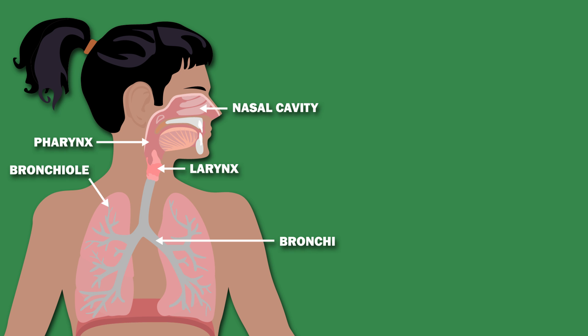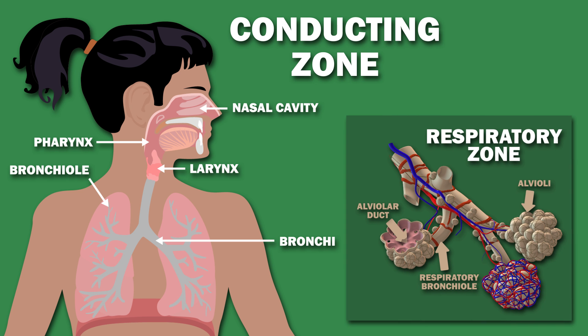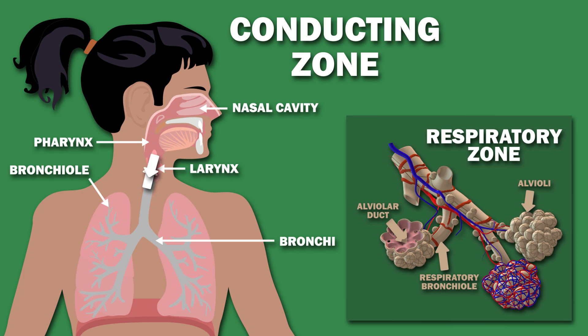The respiratory system can be functionally divided into a conducting zone and a respiratory zone. The conducting zone forms a continuous passage for air moving in and out of the lungs, and includes the nose, pharynx, larynx, bronchi, and bronchioles.